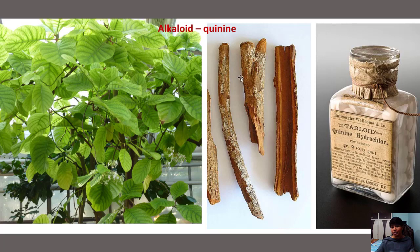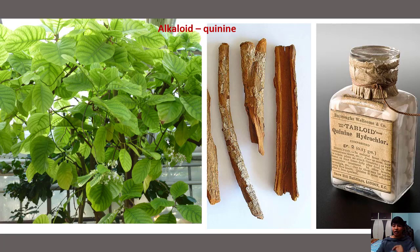Quinine is present in the bark of Cinchona officinalis. This quinine alkaloid is useful to treat the disease called malaria. Humans used this plant's chemical waste for their own benefit. Alkaloids are nitrogenous compounds produced by plants.